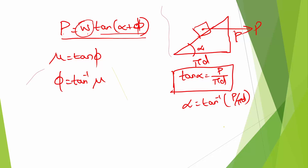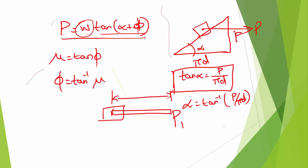If we apply a lever, the lever has length L from the center of rotation. The axis of rotation gives us: P₁ × L = P × (D/2). This is the torque relationship, where D/2 is the radius.